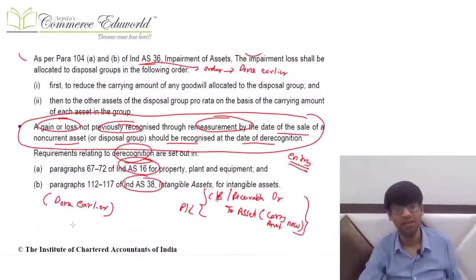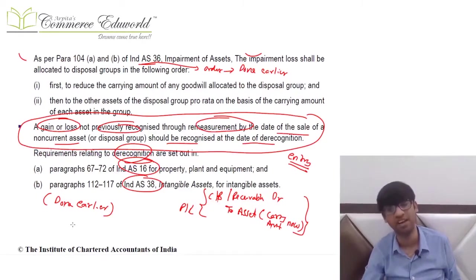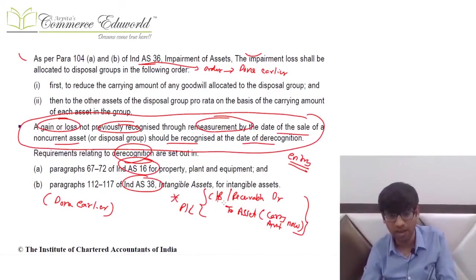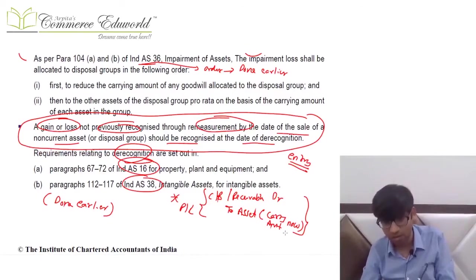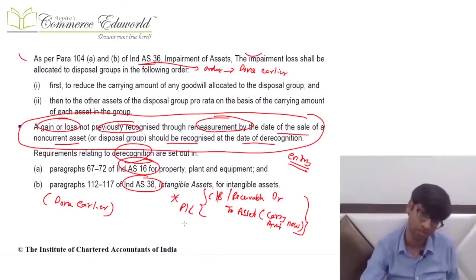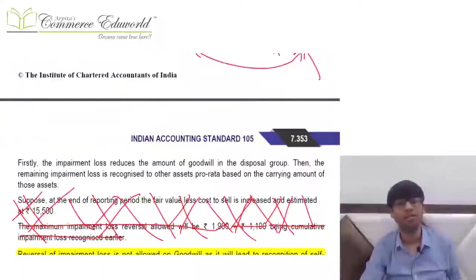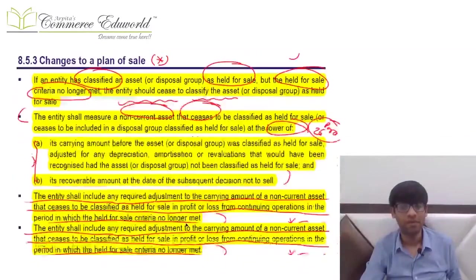When the non-current asset held for sale or disposal group is ultimately sold and de-recognized, a normal de-recognition journal entry is passed: debit cash/bank or receivables, credit the asset at its present carrying amount, and the difference goes to profit and loss.